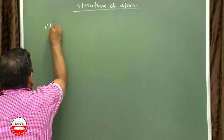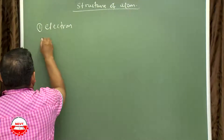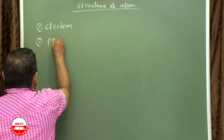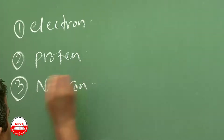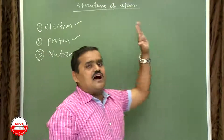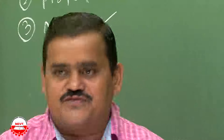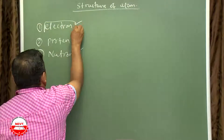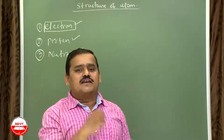Later on, various scientists discovered the subatomic particles: one is electron, second one is proton, third one is neutron. Who discovered each? What is their charge? How are they present? These things we have to discuss. First we will discuss the electron — the subatomic particle which carries negative charge.